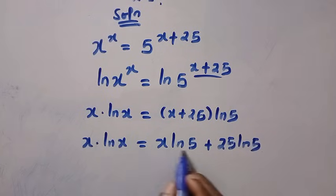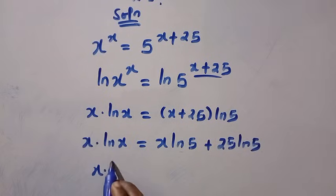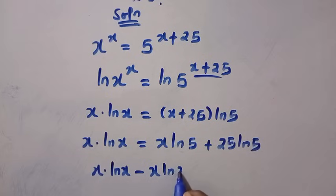So here is x ln 5. Let's take it to this side. We have x multiplied by ln x minus x multiplied by ln 5 equals 25 multiplied by ln 5.